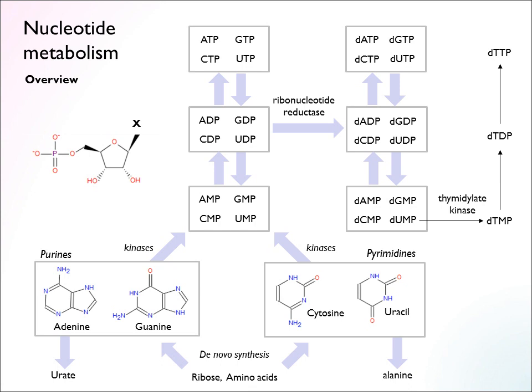Nucleotides can be de novo synthesized. All of them can be synthesized de novo in humans, from ribose and from amino acids, largely as the source of carbon and nitrogen for the nucleobase. We have the familiar four nucleobases: A, G, C, U. And then we have the thymidine base, but we'll get to that.